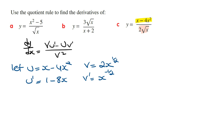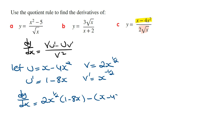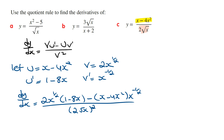Subbing these into the formula, dy/dx is going to be v times u dash, which is 2 times x to the power of a half times 1 minus 8x, minus u times v dash, which is x minus 4x squared times x to the power of minus a half. All over v squared, which is 2 times the square root of x all squared.